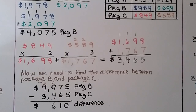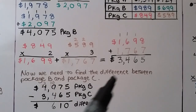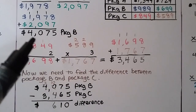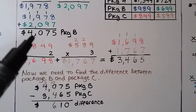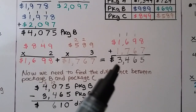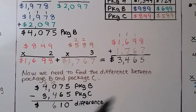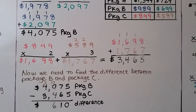Now we find the difference between package B and package C. With the totals in hand, we do $4,075 minus $3,465, and we see the difference between the two packages is $610. This problem wasn't difficult — it just had a lot of steps, but the steps themselves weren't hard.